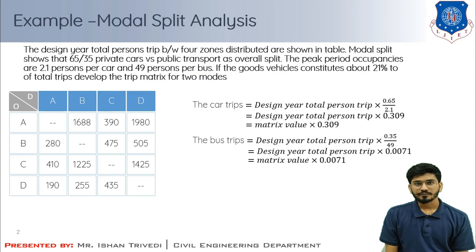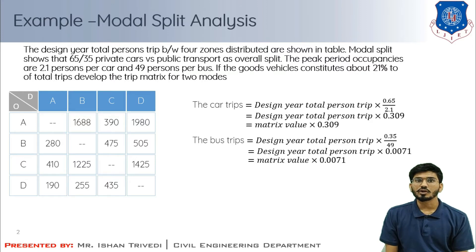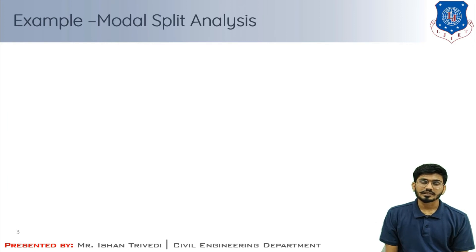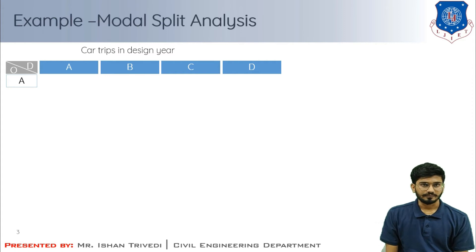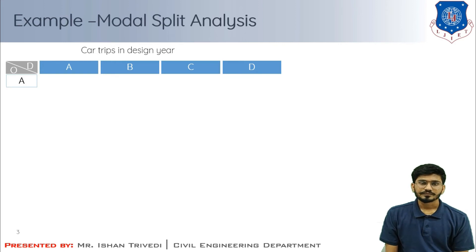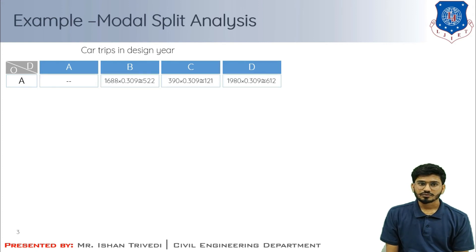I will make two separate matrices for car and bus individually, and a third matrix will be the summation of both. Later we will compute the goods vehicle contribution to overall trips and develop the final matrix. For the car trip matrix, we have origin and destination zones. The factor to apply to each OD cell value is 0.309.